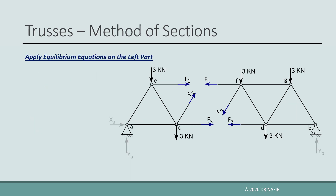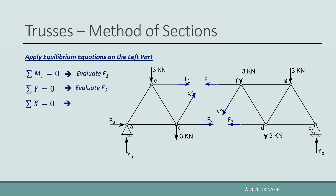For the shown truss, if we work on the left part and take the moment about point C, the internal forces F2 and F3 will pass through C and will not be included in the moment equation. So the moment equation will only have one unknown, F1, which can be evaluated. Next, we can evaluate F2 by applying sigma Y equals zero, because F2 has a component in the Y direction. After evaluating F1 and F2, F3 can be evaluated using the equation sigma X equals zero.